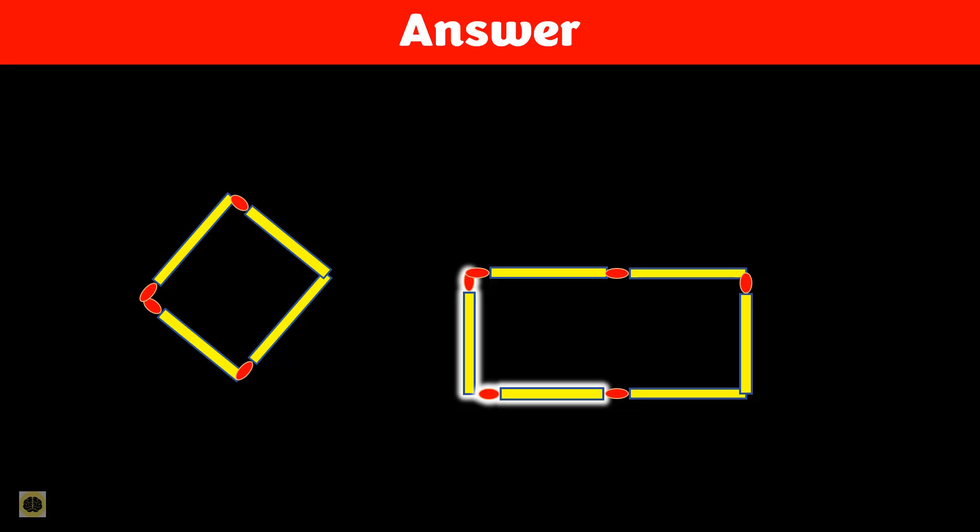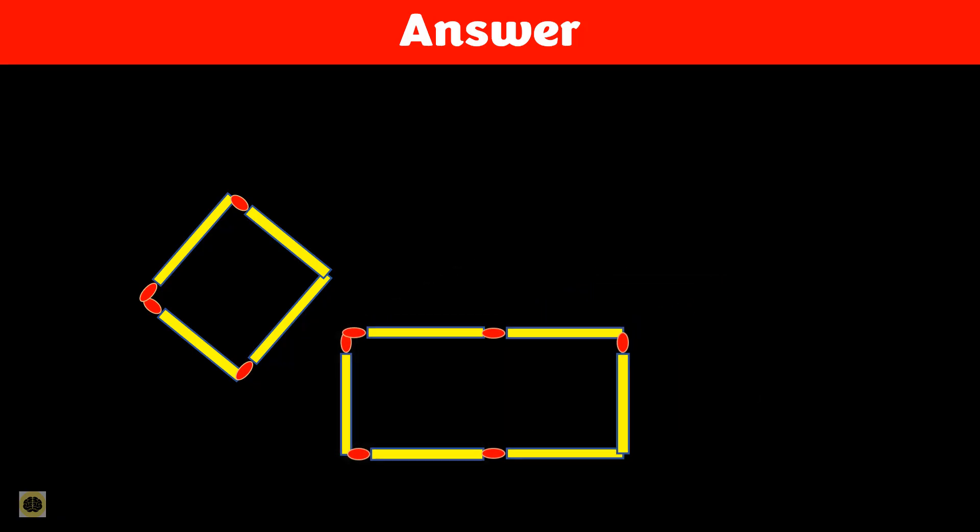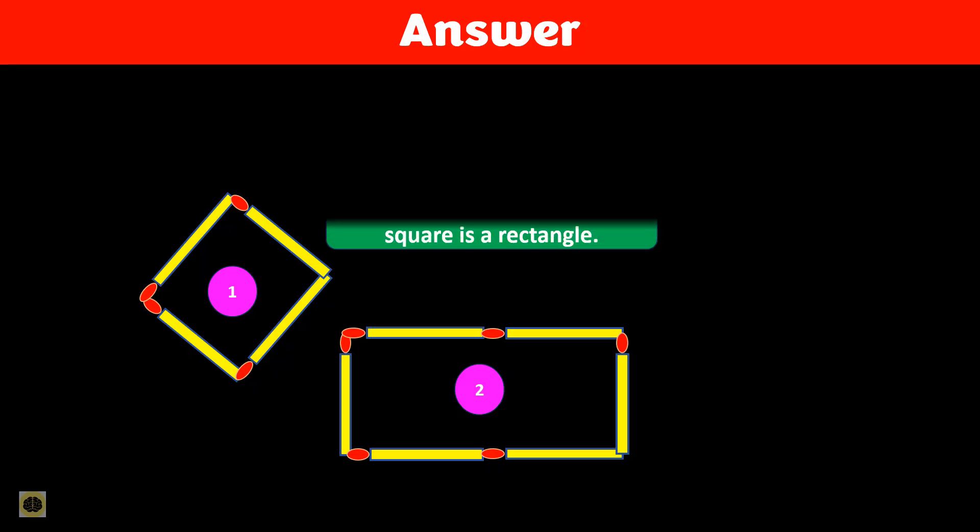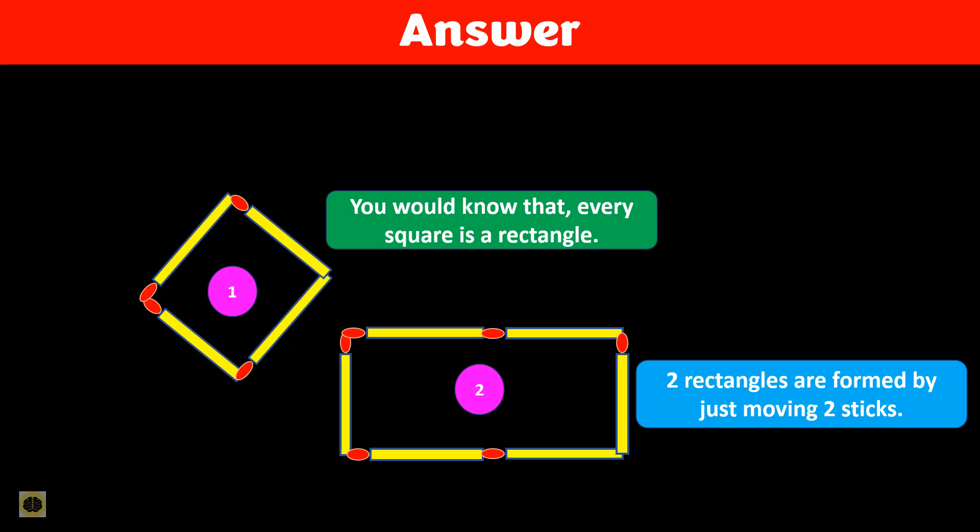With these two moves, we now have a new rectangle created. Once both sticks are repositioned, you're left with one larger rectangle, one smaller rectangle, which visually appears as a square. Two rectangles formed cleanly with only two moves.